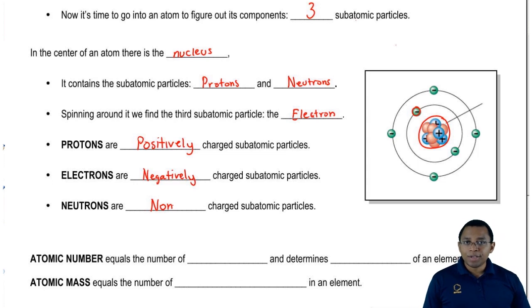Inside the nucleus, we have protons which are positive and neutrons which are neutral. So the nucleus overall has a positive charge. Then the electrons are spinning around it, and the electrons are negatively charged.